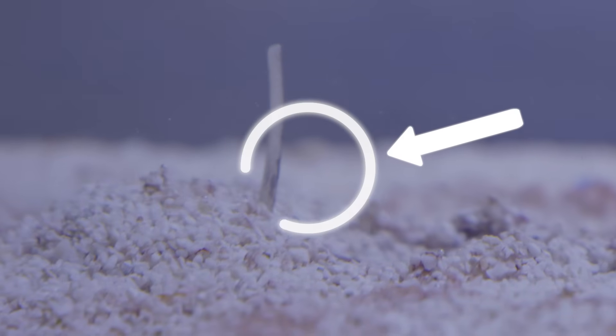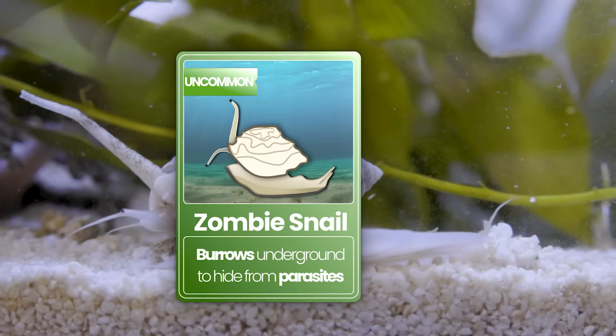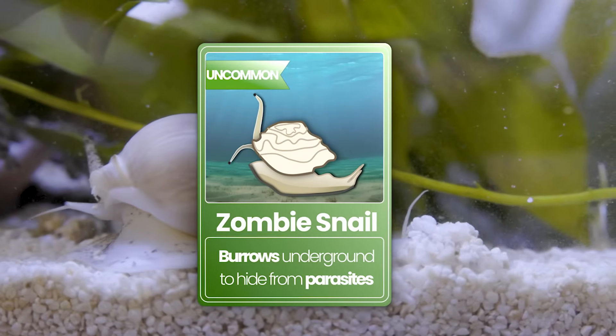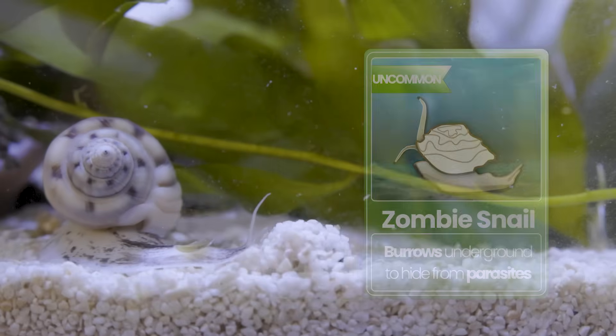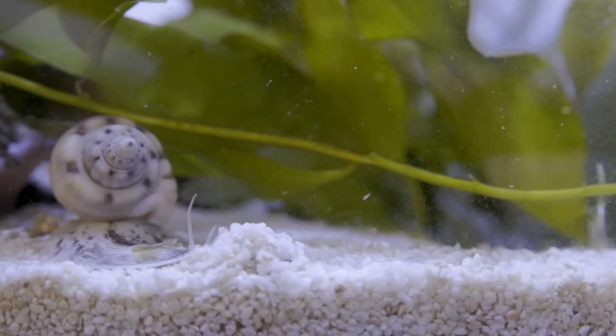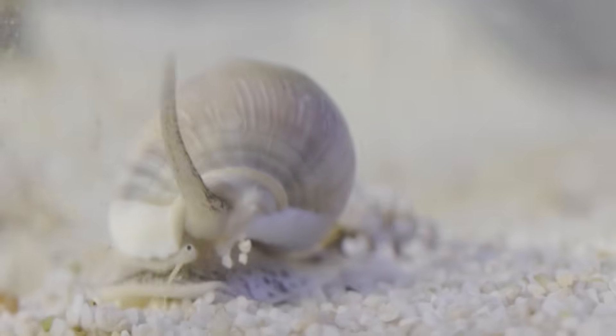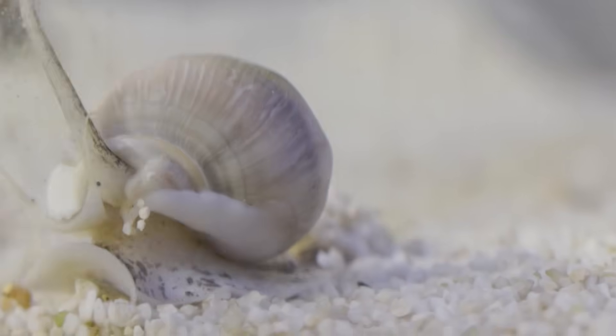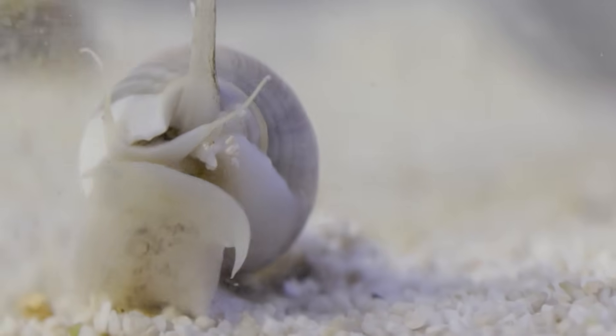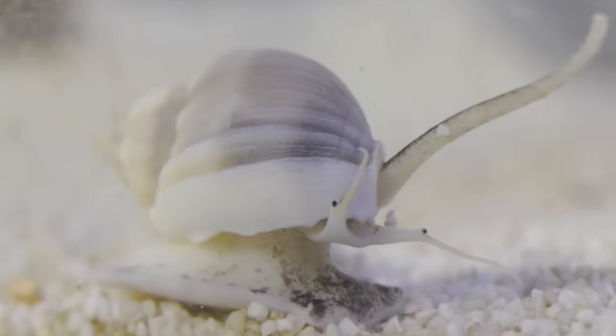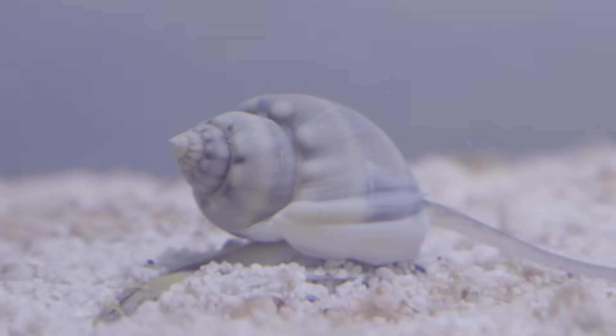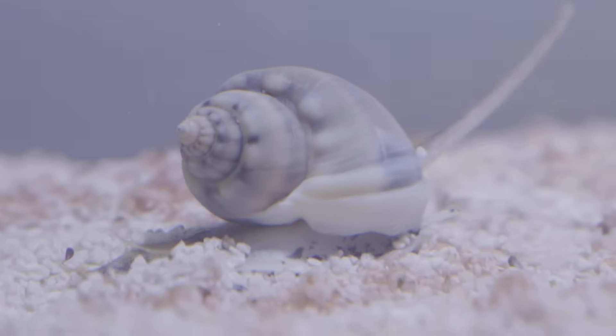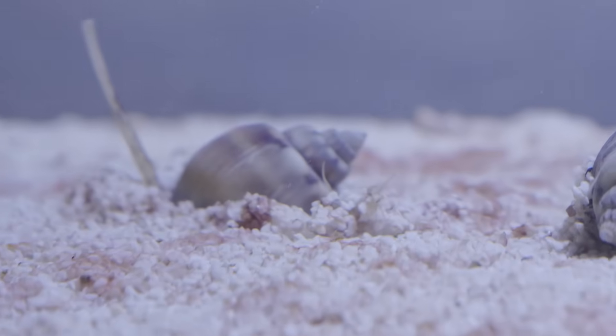Next it was time to add something a little stranger. The nassarius snail. Buried beneath the sand, they lie still and unseen, waiting for the scent of food to drift by. The moment it does, they rise from the sand, stretching out their long siphons and gliding towards their target. Native to warm tropical waters, these snails play an important role in keeping the reef floor clean, devouring leftover food before it can decay. They might look eerie when they emerge from the sand, but they are some of the hardest working members of the cleanup crew.